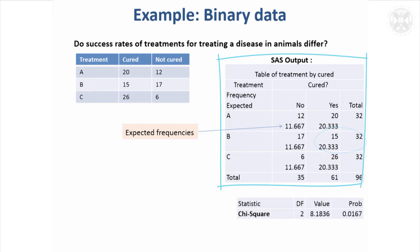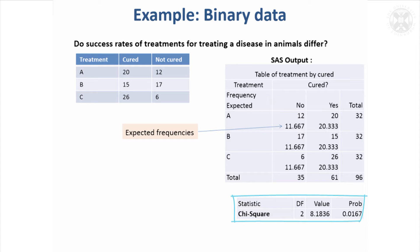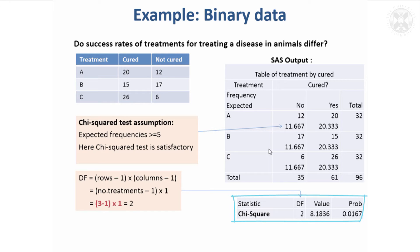For group B, it's differing from what you would expect — there are fewer animals cured. For group C, there are actually more animals cured than expected. But is that just by chance, or is the cure rate genuinely higher in group C? That's what the chi-squared test evaluates. It comes up with a test statistic called the chi-squared statistic, which here takes a value of 8, and compares it against the chi-squared distribution. Higher values lead to smaller p-values.